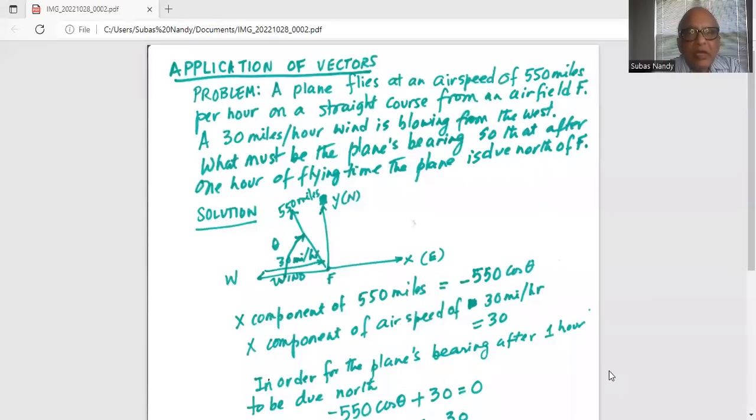A plane flies at an airspeed of 550 miles per hour on a straight course from an airfield F. A 30 miles per hour wind is blowing from the east.